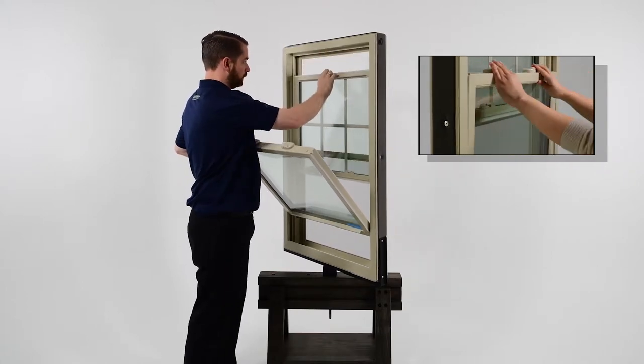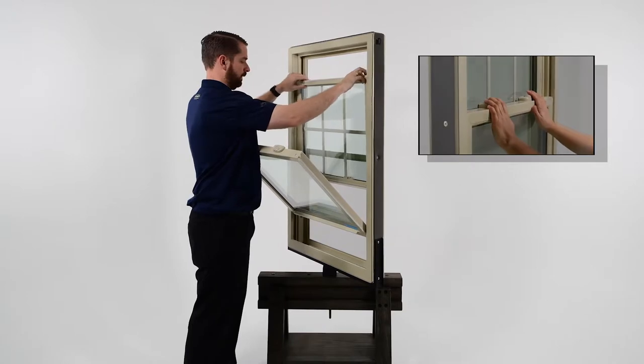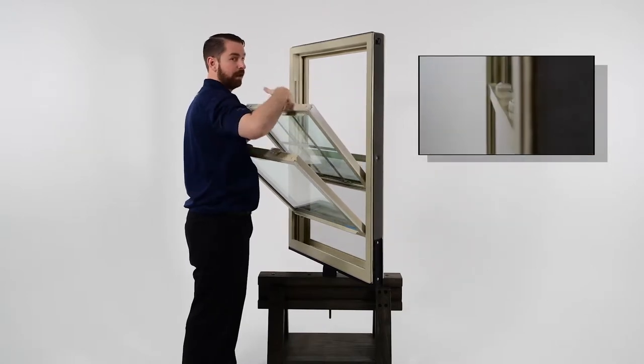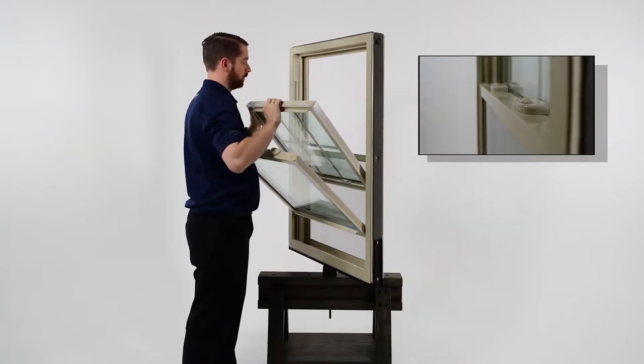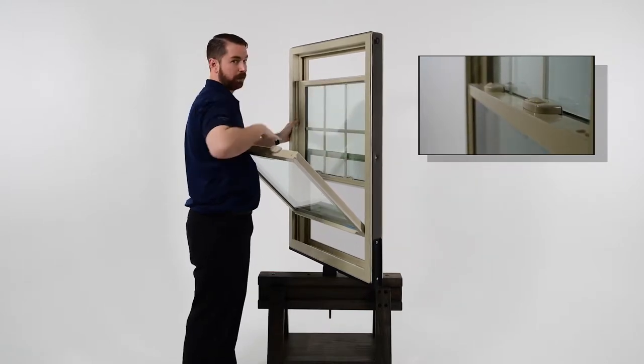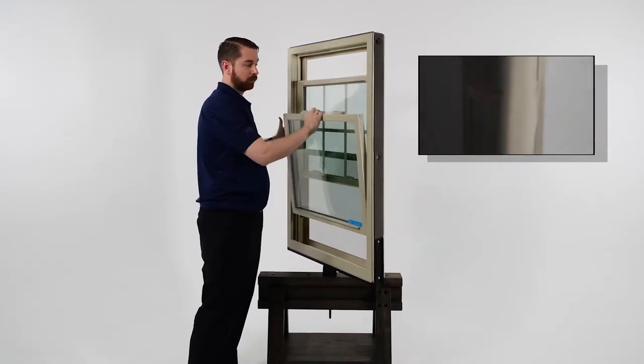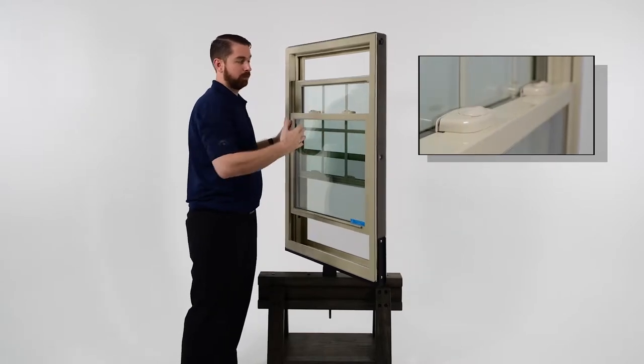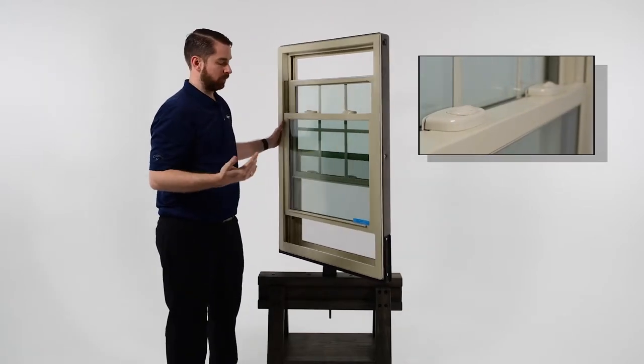You can also tilt the top sash in so you can clean that surface as well from inside your home. This feature makes it really popular with homeowners that have two-story homes that would like to be able to clean their windows from inside their home.